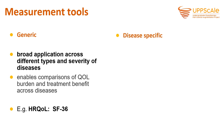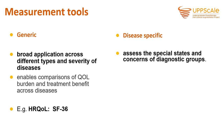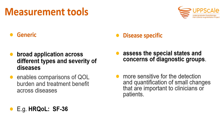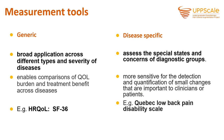Disease-specific measurements are specific to the disease you're trying to measure — back pain specific, shoulder specific, CFD specific, fibromyalgia specific and so on. They assess the special states and concerns of the diagnostic groups and are more sensitive for the detection and quantification of small changes that are important to clinicians or patients. An example is the Quebec Low Back Pain Disability Scale, which is in the Dutch guidelines for low back pain.